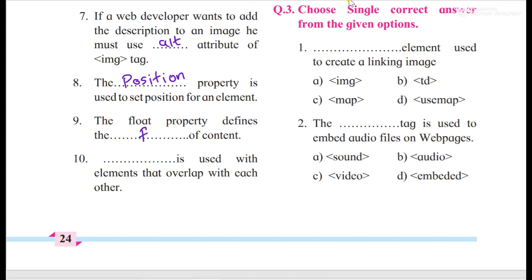Then we'll move forward. The float property defines the dash of content. Float, that means if you write float left, then it will flow to the left of the web page. If right, then right. None, then by default. So the flow. The float property defines the flow of the content.